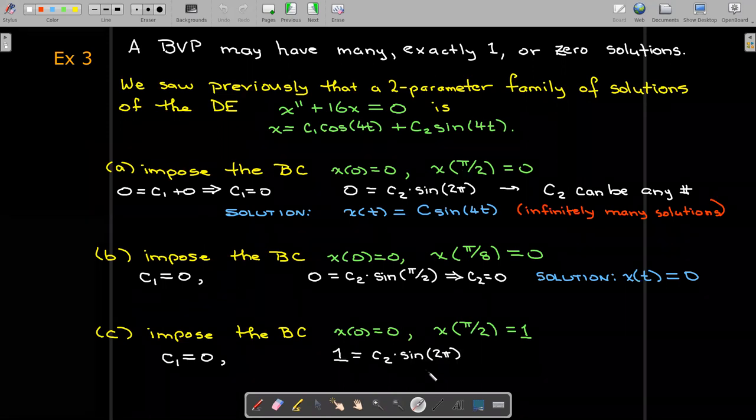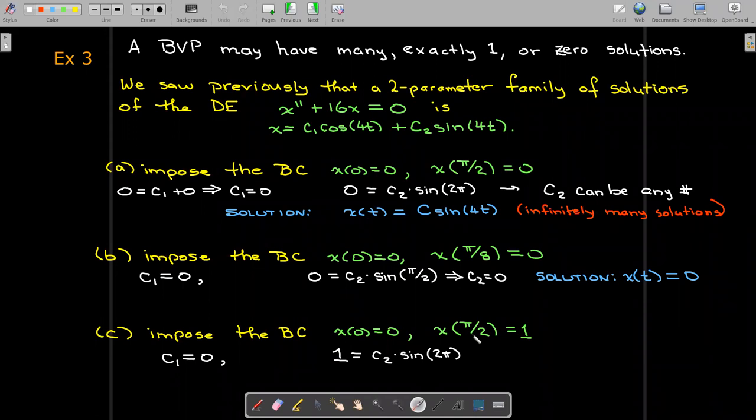But now let's look at this equation here. I go ahead and replace t with π/2. And so multiply that times 4, I'll get sin(2π) which is 0. But my right hand side is 1. Well, I can't multiply anything times 0 and get 1. So this is what we call a contradiction. And whenever you arrive at a contradiction in imposing the boundary conditions, that means there is no solution.